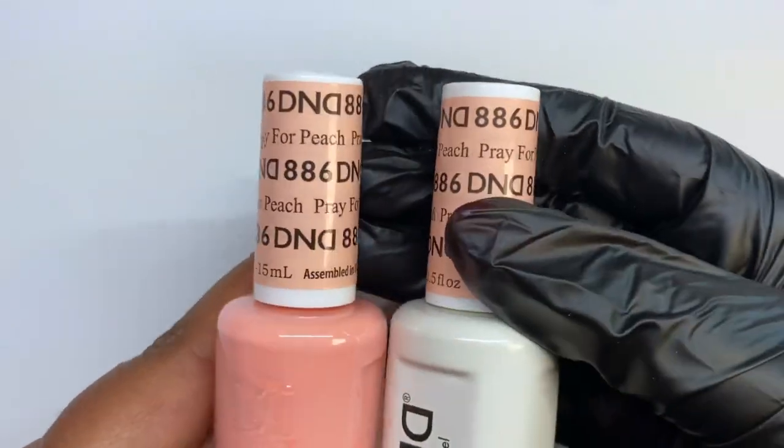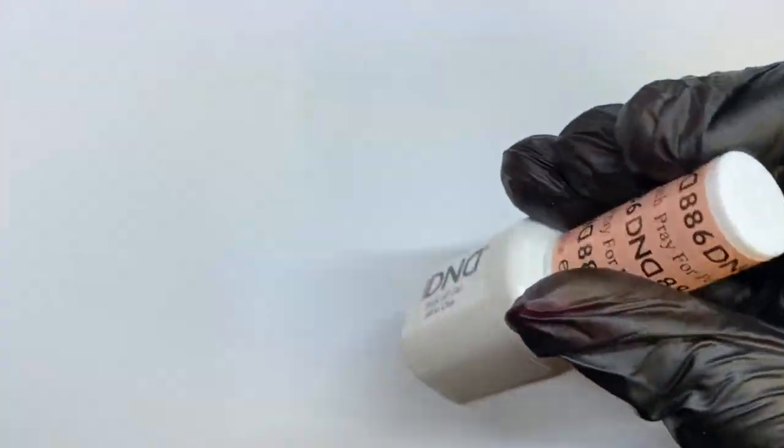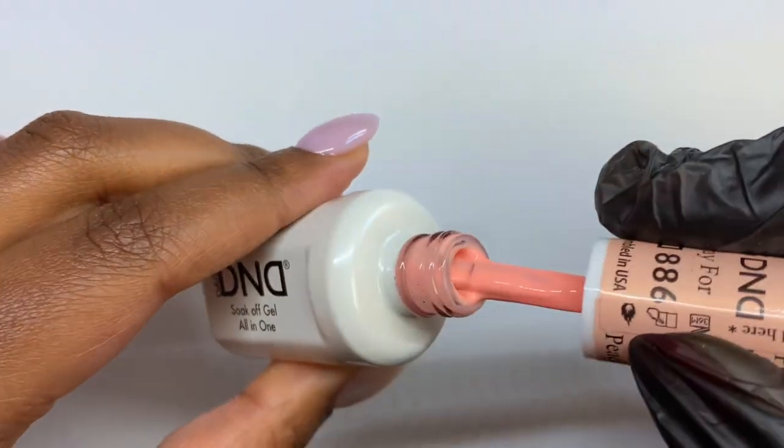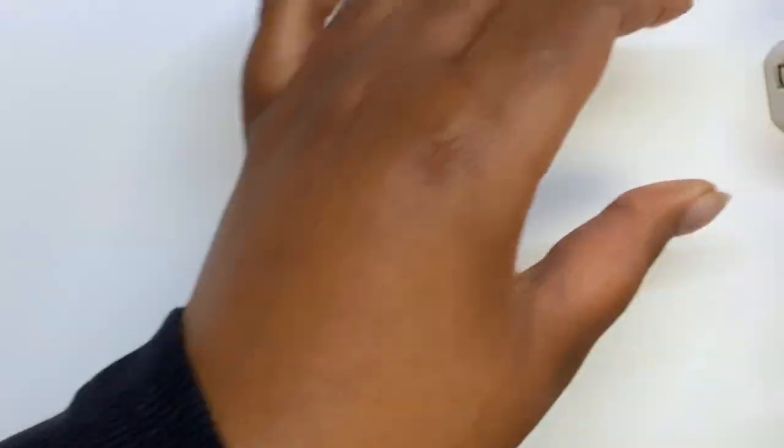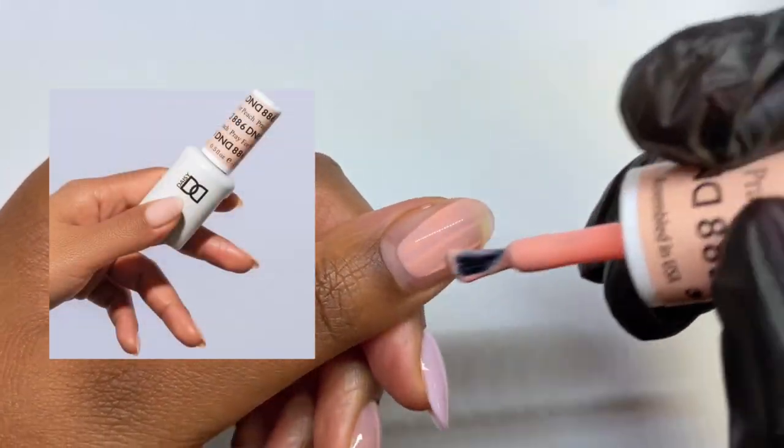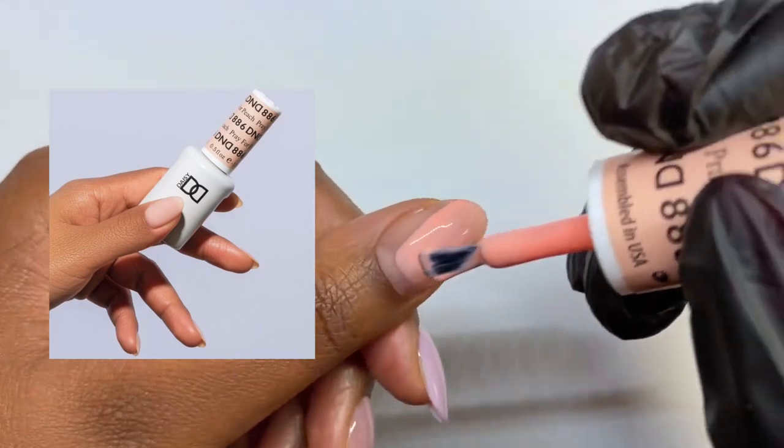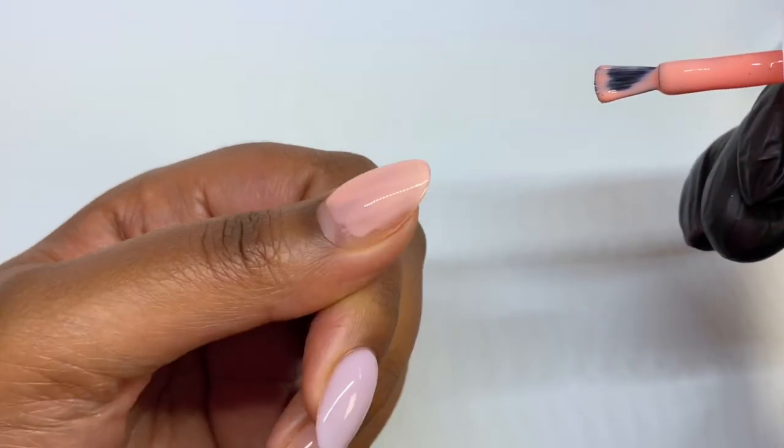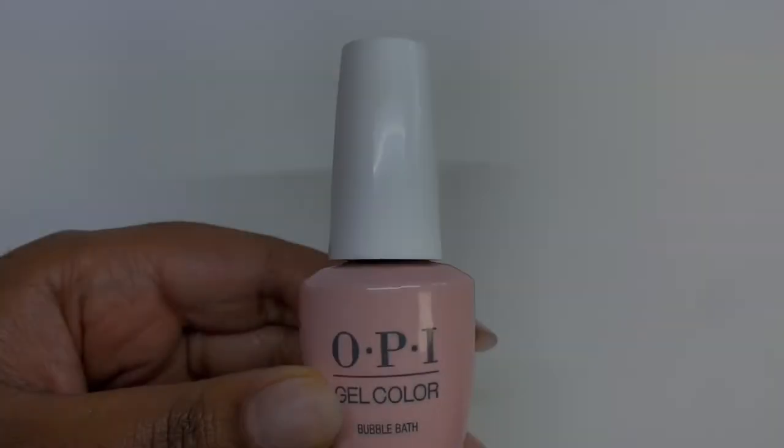And if you've watched my previous videos, you guys will know that I love me a sheer peach nude. But when it came, I took the brush out of the bottle and I was like, this looks very opaque. I don't know about that. And then of course I put it on my nail and it looks nothing like the swatch. And I don't know if this is from a different collection and they sent me the wrong one. I'm not sure what happened, but yeah, not sheer nude.